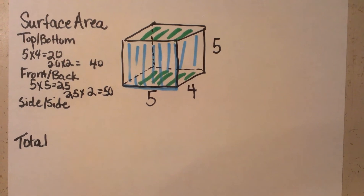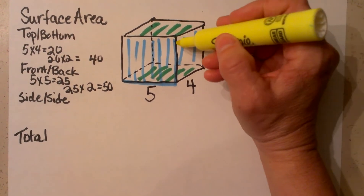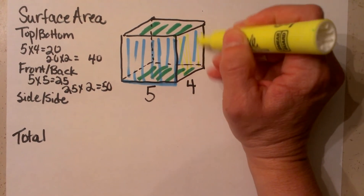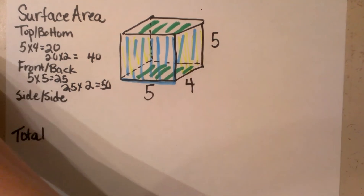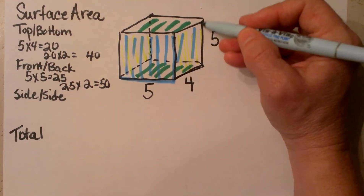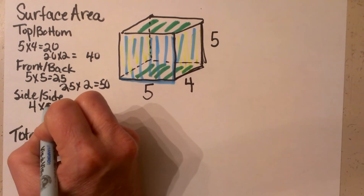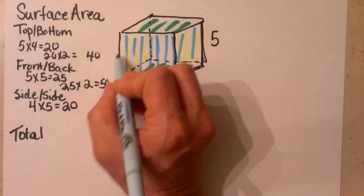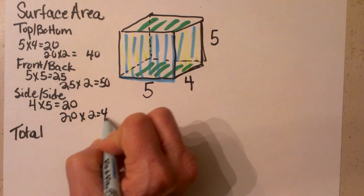Now let's look at the two sides — the left side and the right side. That side is 4 and the height is 5, so that is 4 by 5. That side is 20, but again I have two of those, so let's double that — that gives me 40.